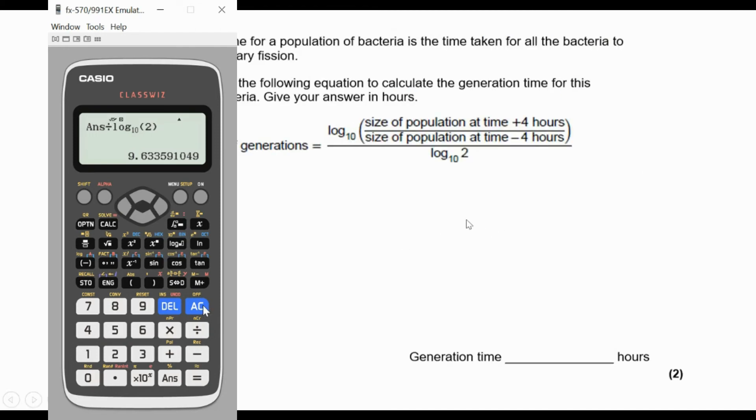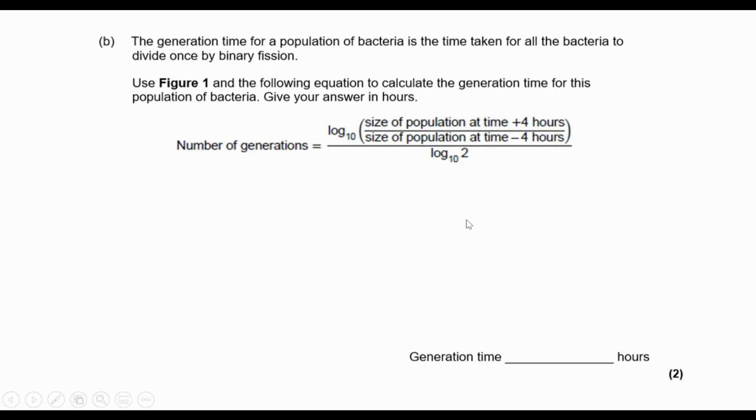9.633 is basically a generation, but it says what is the generation time. Use the following equation to calculate the generation time for this population of bacteria.